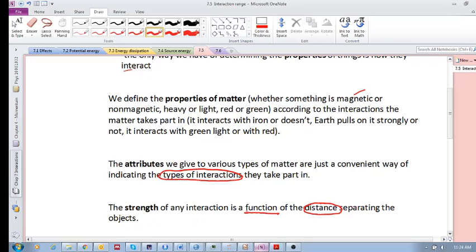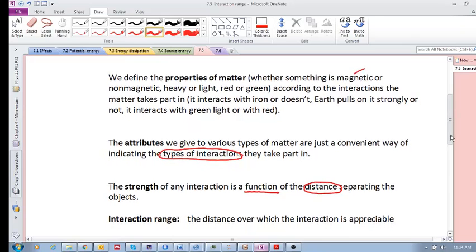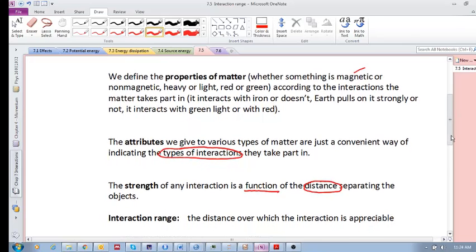We'd like to define something called the interaction range. This is the distance over which the interaction is appreciable, right, where these objects can feel that interaction, where they can feel the strength of the interaction.